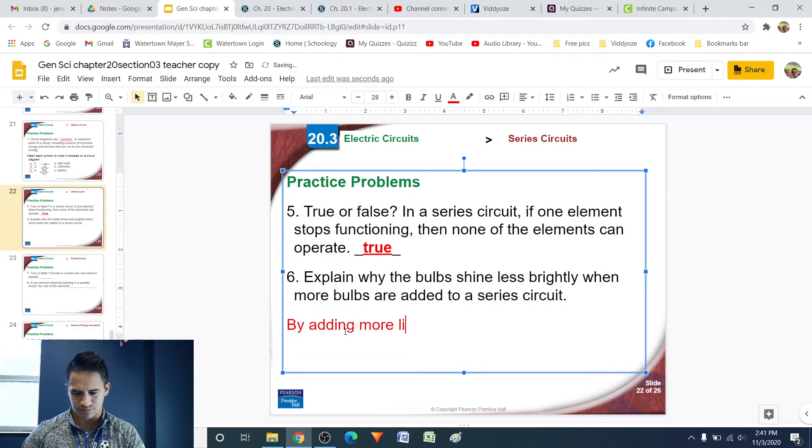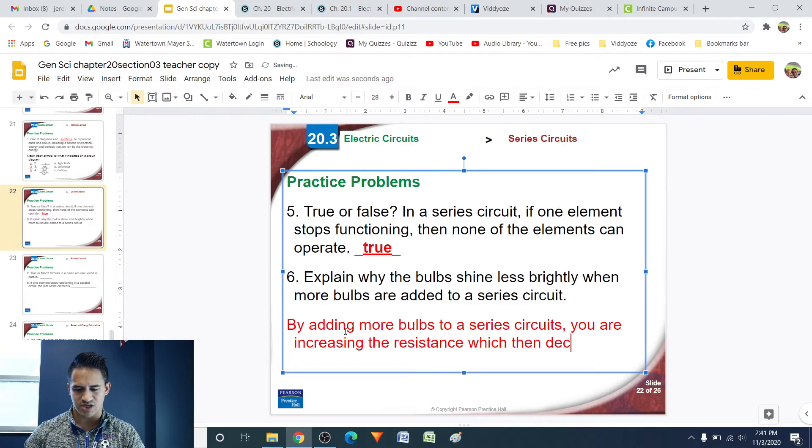By adding more bulbs to a series circuit, you are increasing the resistance, which then decreases the current.